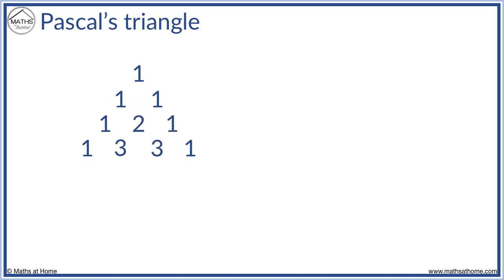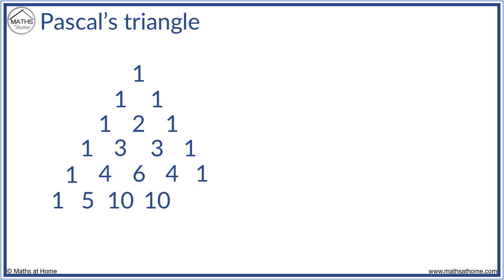We know our next row starts with 1. 1 plus 3 equals 4, 3 plus 3 equals 6, 3 plus 1 equals 4, and we end with a 1. The next row starts with 1. 1 plus 4 equals 5, 4 plus 6 equals 10, 6 plus 4 equals 10, 4 plus 1 equals 5, and we finish with a 1. We can keep adding more rows if we need.